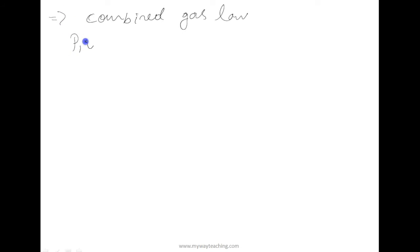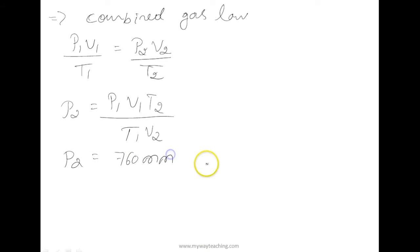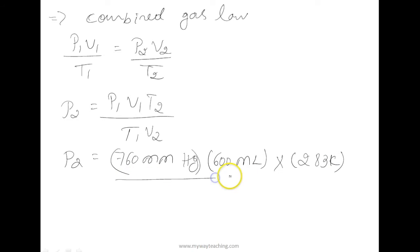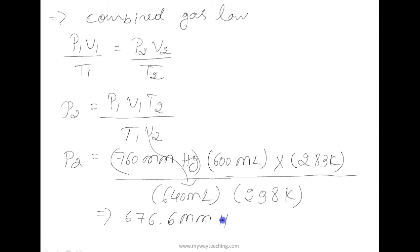The combined gas law states P1 V1 divided by T1 is equal to P2 V2 divided by T2. Substituting: P2 is equal to P1 V1 T2 divided by T1 V2, which gives 760 mmHg × 600 mL × 283 K divided by 298 K × 640 mL. The answer is 676.6 millimeters Hg.